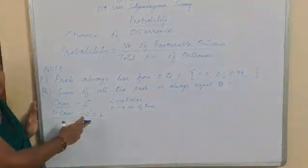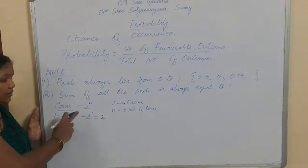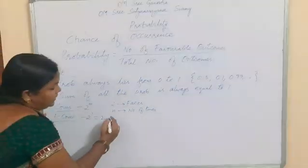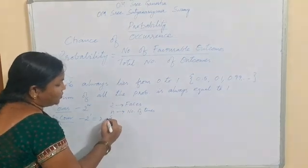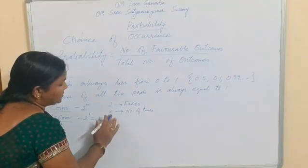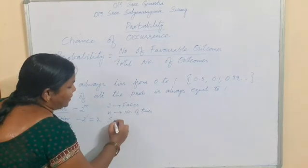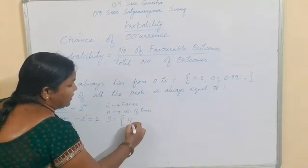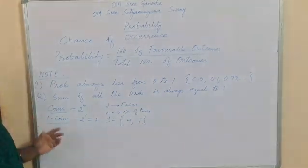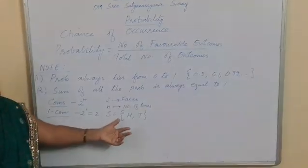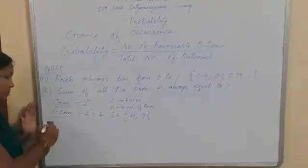That is, the total number of chances when we toss 1 coin is 2. The 2 chances are: S equals — one is Head and another one is Tail. These are the 2 chances when we toss a coin.